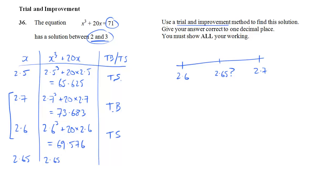This will be the last calculation. 2.65 cubed plus 20 times 2.65. And we'll go through adjusting, adding the 5 on the end in the calculator, doing it the quick way.